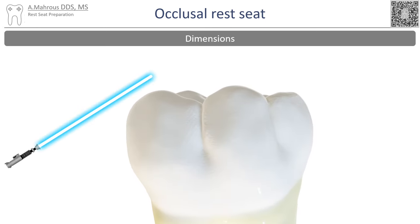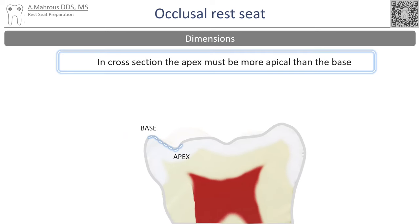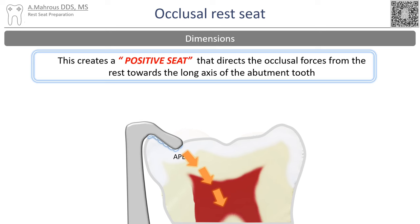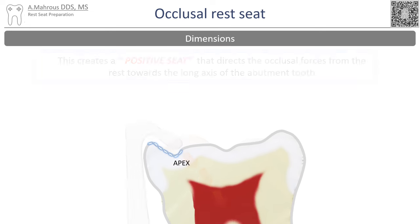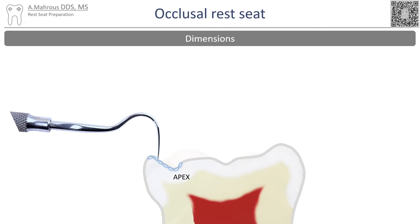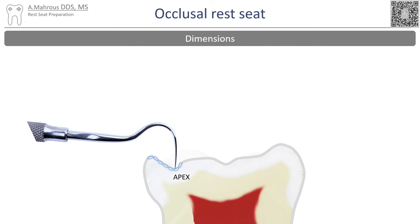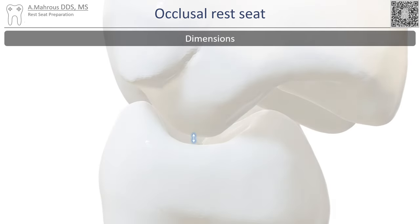Now let's take a look at the cross section of the tooth. In this view we can see that the apex of the occlusal rest is more apical than the base. This is important because it creates a positive seat that directs the occlusal forces from the rest towards the long axis of the abutment tooth. Presence of a rest seat can be confirmed by placing an explorer on the base of the rest seat.